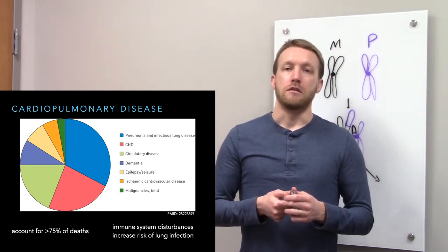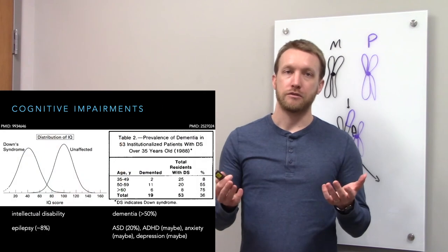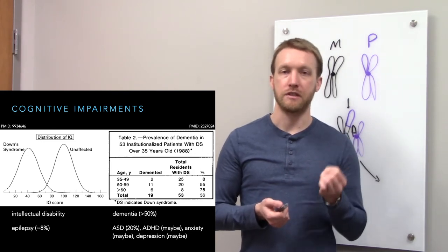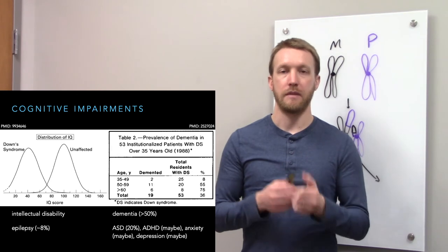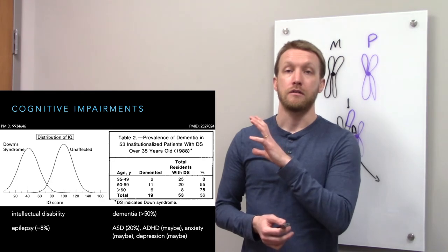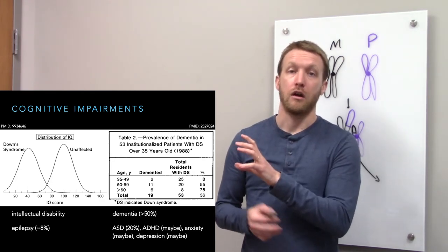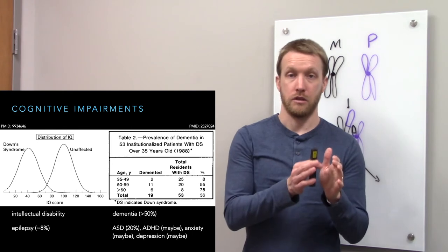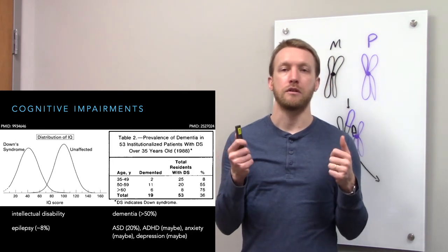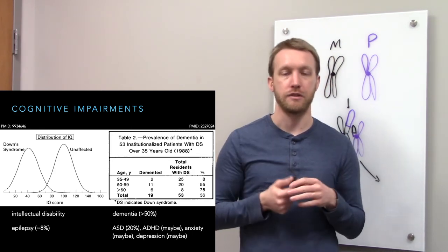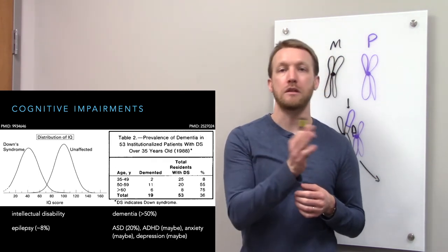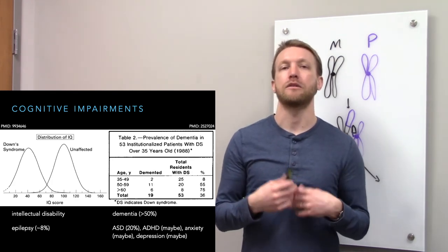One of the principal features is intellectual disability. Invariably, some degree of intellectual disability occurs in people with Down syndrome. It may be mild or severe. As you can see here, the distributions of IQ scores are lower in people with Down syndrome than in people without. In the general population, we assign the mean value of 100 to IQ scores with a standard deviation of 15. Anything 70 or below is considered intellectual disability.